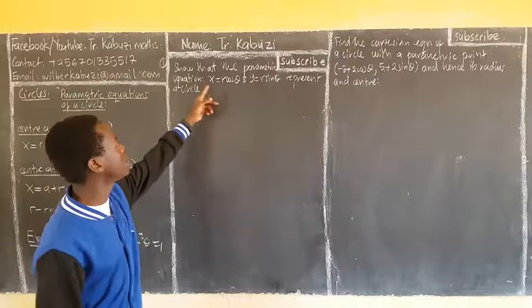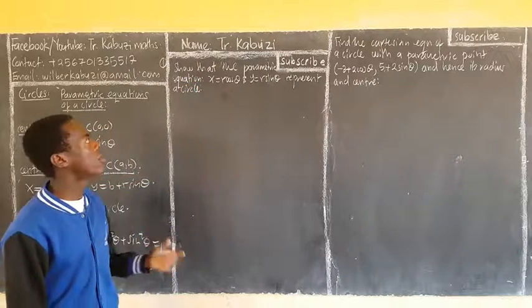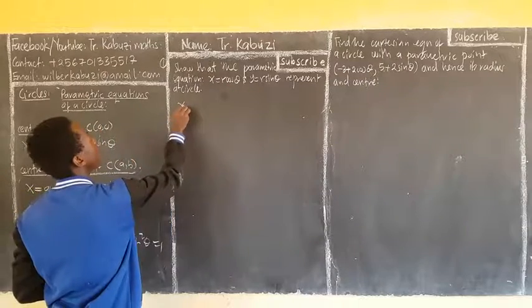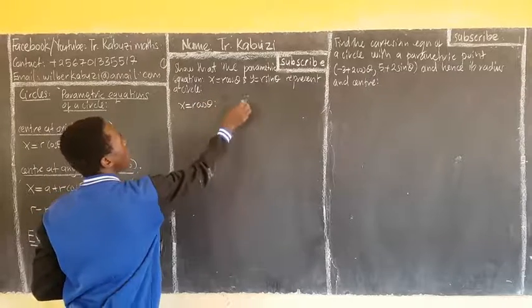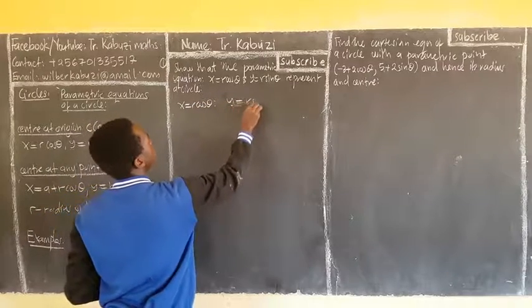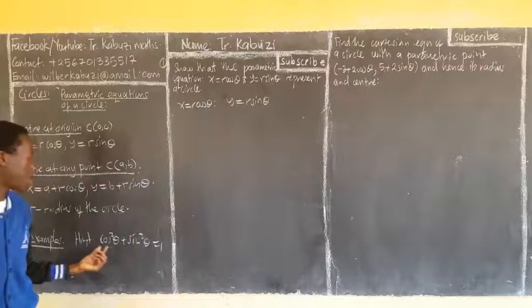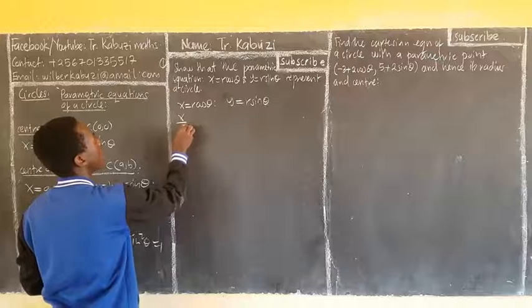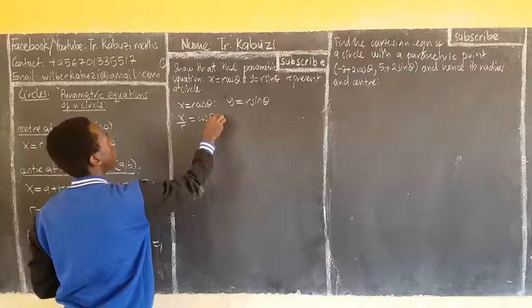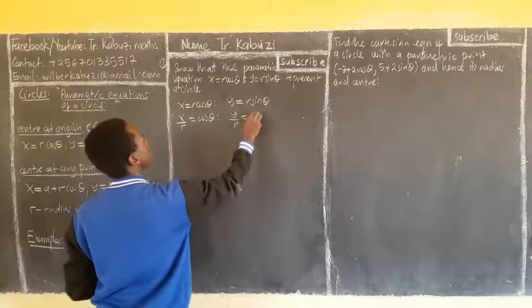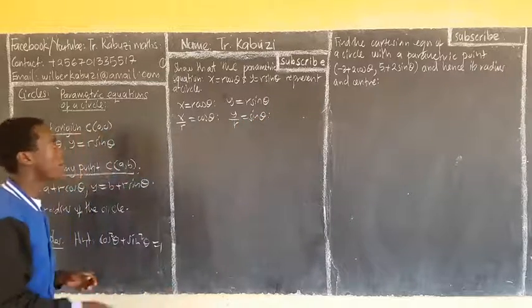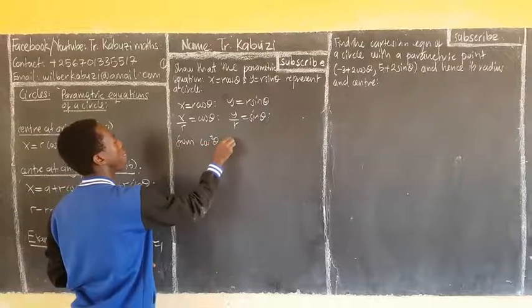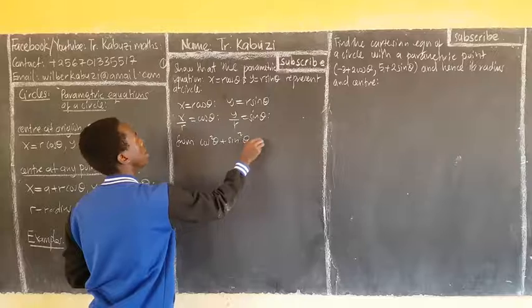Now show that the parametric equations, this and this, represent a circle. All you do, you make cos the subject, you make also sin the subject. From here, my x is r cos theta, and I am saying my y is r sin theta. I need cos the subject, so my x over r is cos theta, and my y over r is sin theta. From cos squared theta plus sin squared theta equal to 1,